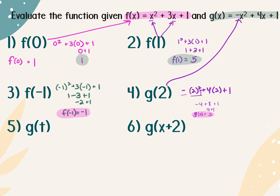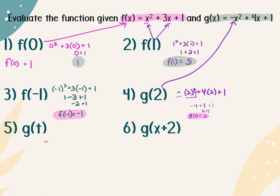Number 5: g of t. We're taking the g of x function and everywhere there's an x, we plug in a t. So I get negative t squared plus 4 times t plus 1. There's no simplifying there — it stays almost exactly like the original, except that everywhere there was an x, there's now a t.